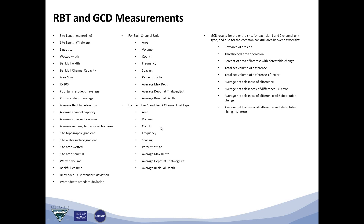At a site basis, for each channel unit type in Tier 1 and Tier 2, we calculate those same metrics. Finally, we produce a series of metrics related to geomorphic change detection, such as the raw area of erosion, thresholded based on uncertainty to produce a thresholded area of erosion, the net volume of difference, and the average net thickness of difference between the two digital elevation models. That was a brief introduction to the River Bathymetry Toolkit within the CHAMP program.